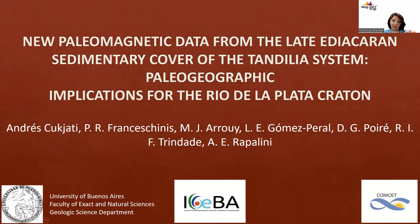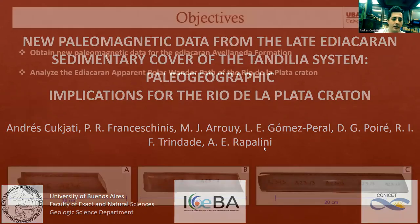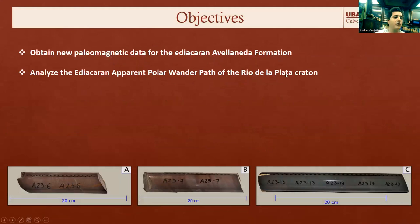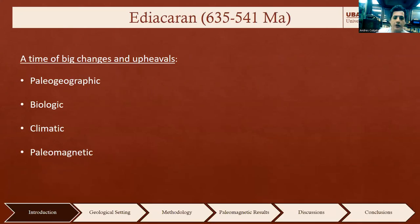The principal objective of this work is obtaining new paleomagnetic data for the Ediacaran Avellaneda Formation and analyzing the Ediacaran apparent polar wander path of the Rio de la Plata Craton. First, I have to mention some things about the Ediacaran — it is a very strange period of Earth's history where a lot of things happened.